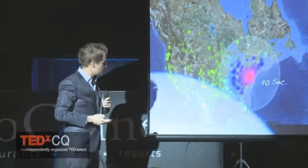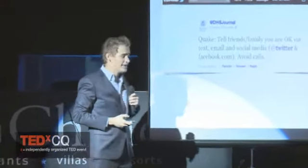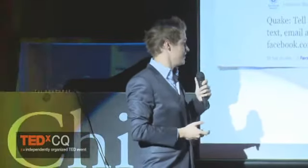Homeland Security actually sent out a message to American citizens on Twitter: 'Tell friends and family you're okay via text, email, social media — Twitter, Facebook — avoid calls.' Because what happened was that all the phone networks went down as people started calling each other. I think it's quite telling that today it's much easier to use Twitter or Facebook to communicate with friends than traditional phone lines.